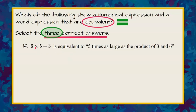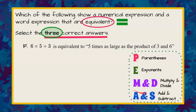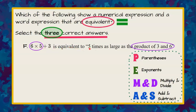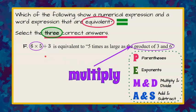Our last choice, F: six multiplied by five, add three — is it equivalent to 'five times as large as the product of three and six'? We have two operations, so we apply order of operations. No parentheses, no exponents, so we multiply first: six times five. This is not the product of three and six, and adding three is not the same as multiplying by five. So this is not equivalent, and we rule out choice F.